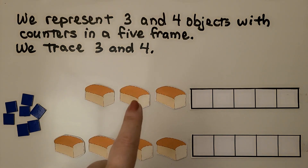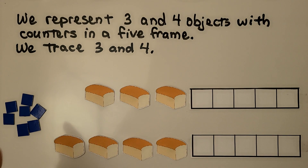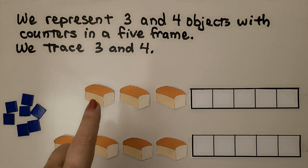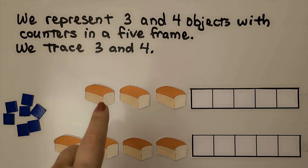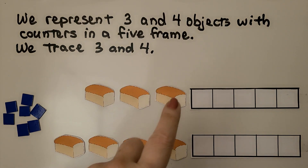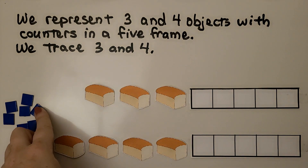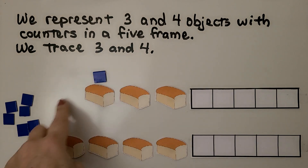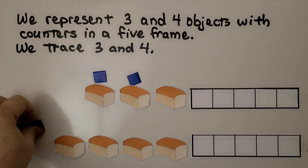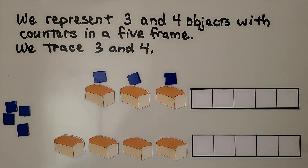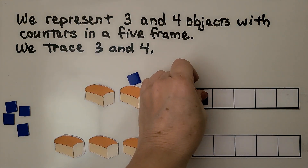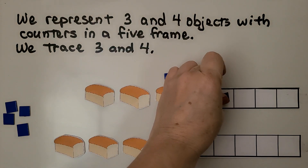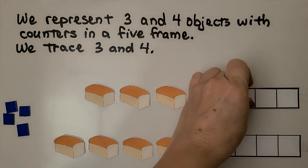Here we have 1, 2, 3 loaves of bread, and we have some counters. We can put 3 counters into the 5-frame — 1 counter for each loaf of bread. We have 1, 2, 3 loaves of bread. In the 5-frame, we can put 1, 2, 3 counters.